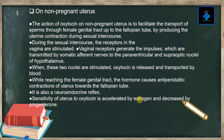The action of oxytocin on the non-pregnant uterus is to facilitate the transport of sperm through the female genital tract up to the fallopian tube, by producing uterine contractions during sexual intercourse. During sexual intercourse, the receptors in the vagina are stimulated and generate impulses transmitted by somatic afferent nerves to the paraventricular and supraoptic nuclei of the hypothalamus. Oxytocin is then released and transported by blood, causing antiperistaltic contraction of the uterus towards the fallopian tube. This is also a neuroendocrine reflex.